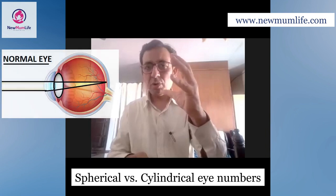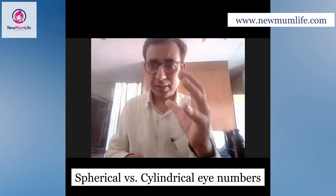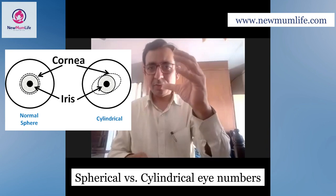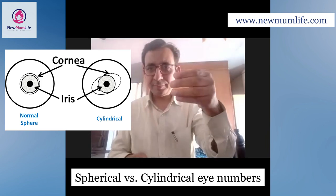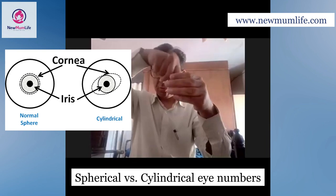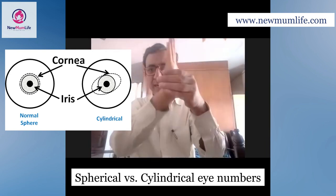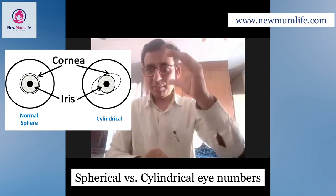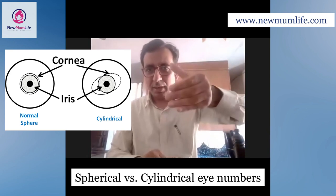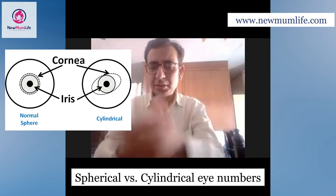But sometimes the cornea is not a perfect sphere; rather it is a part of a cylinder. Because its shape is very round in one direction, but in the other direction the flatness is greater. This can be in one angle, this can be in another angle, or in other in-between angles.